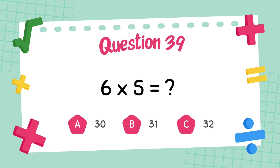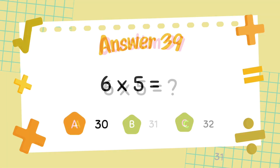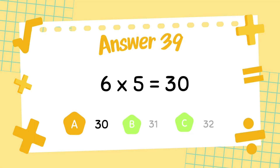What is 6 multiply 4? What is 6 multiply 5? The answer is 30.